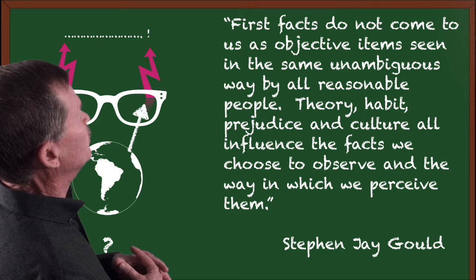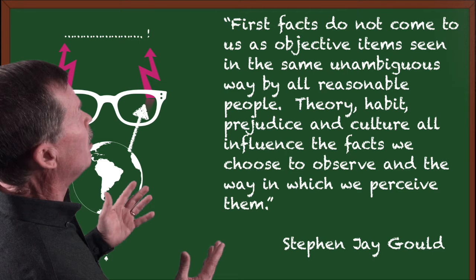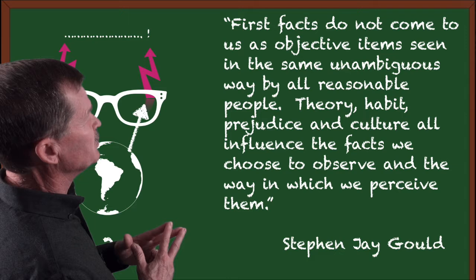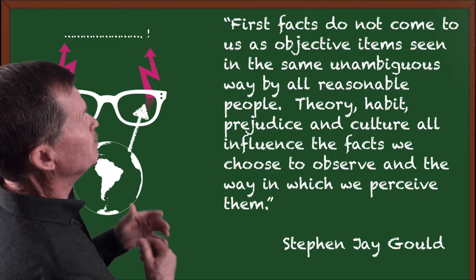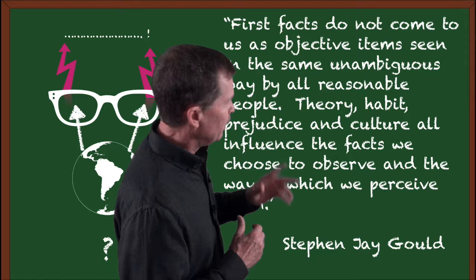Stephen Jay Gould, now deceased, was a North American biologist very famous for his writings. One of these quotes that really struck me says: First facts do not come to us as objective items seen in the same unambiguous way by all reasonable people. Theory, habit, prejudice, and culture all influence the facts we choose to observe and the way in which we perceive them.